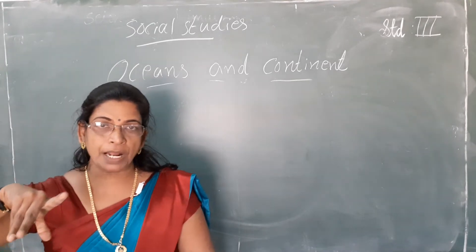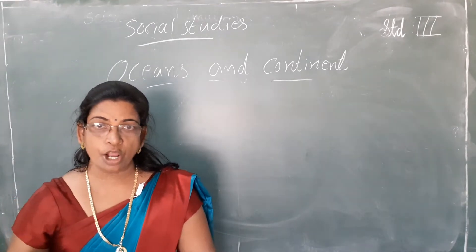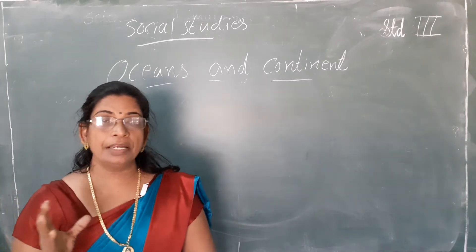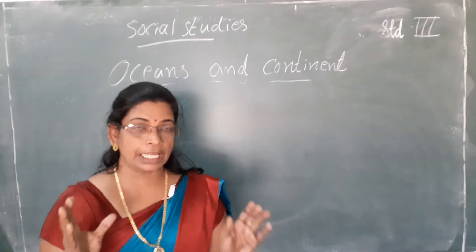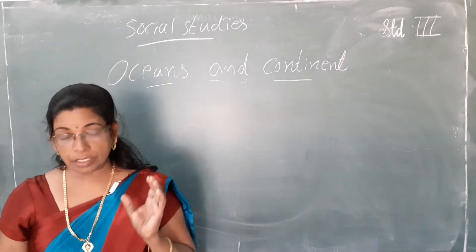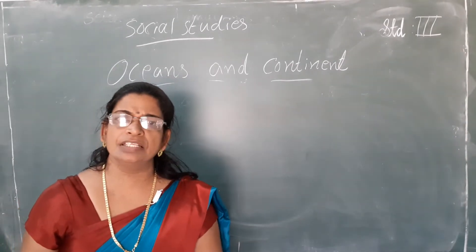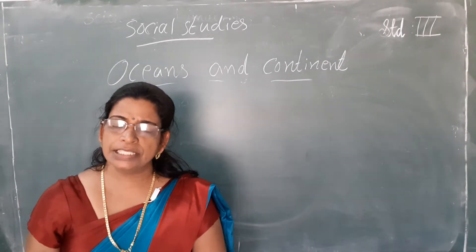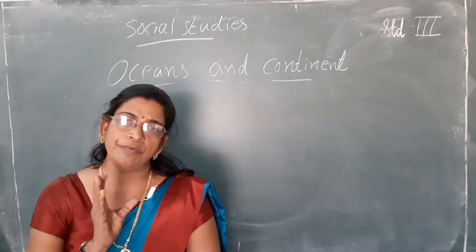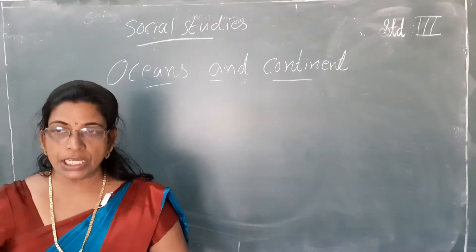Looking at the globe we can see the different parts, different countries in the world, and different types of mountains, oceans — everything we can see with the help of a globe. So what is a globe? A globe is a model of the earth.